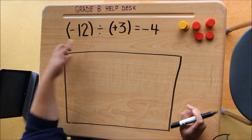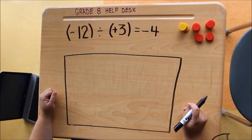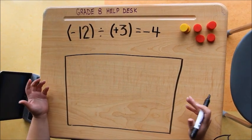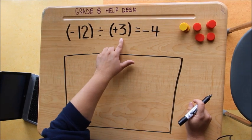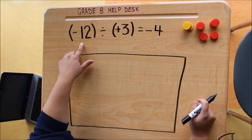Next, we're going to look at the models. And so in our bank, we want to end up with 12 red tiles. How many sets of positive 3 can we use to get negative 12 tiles?